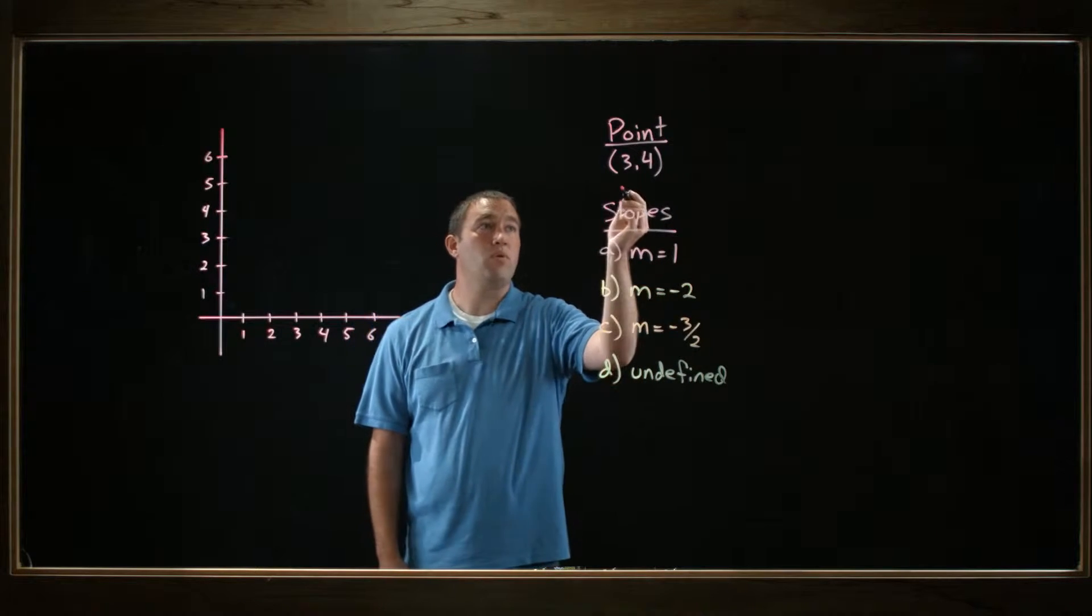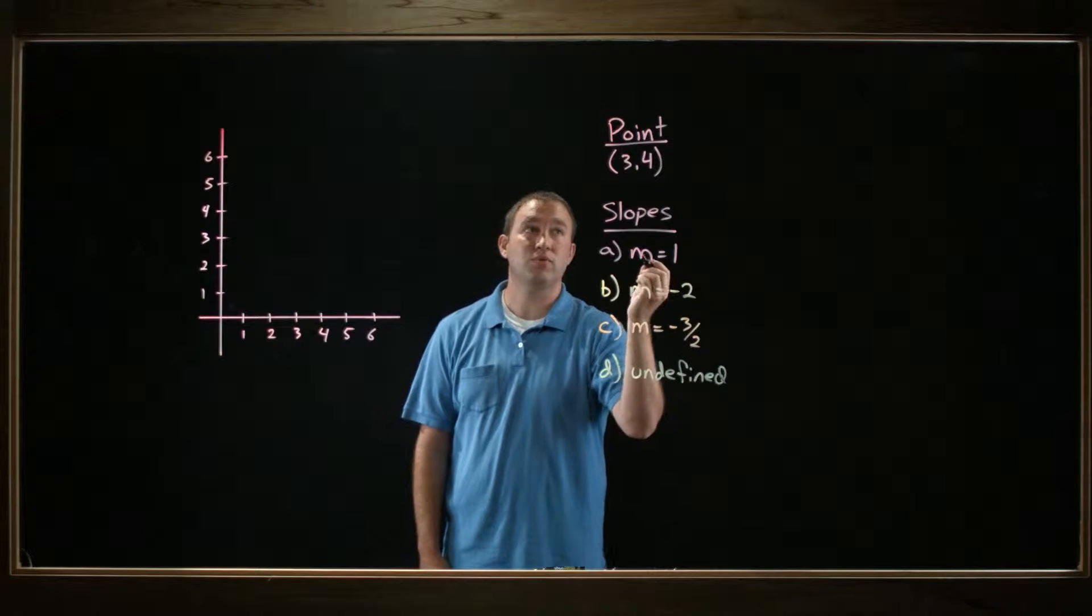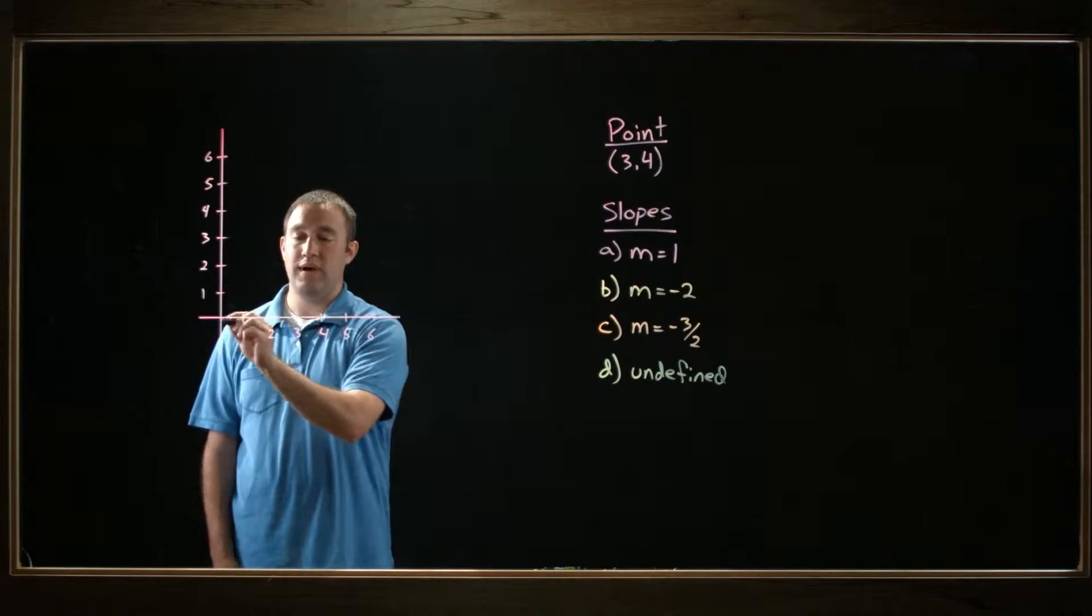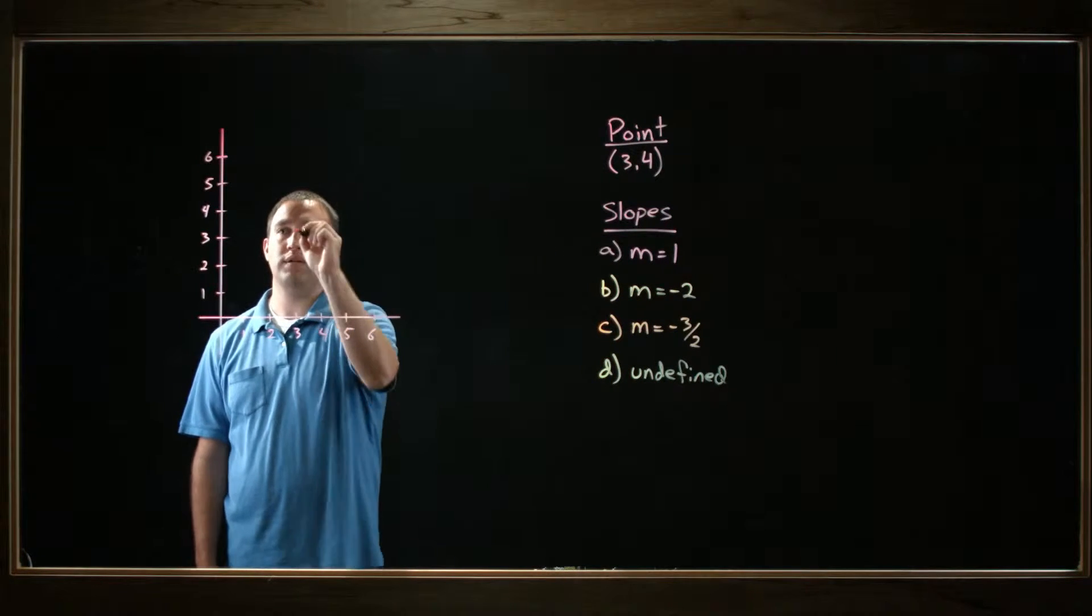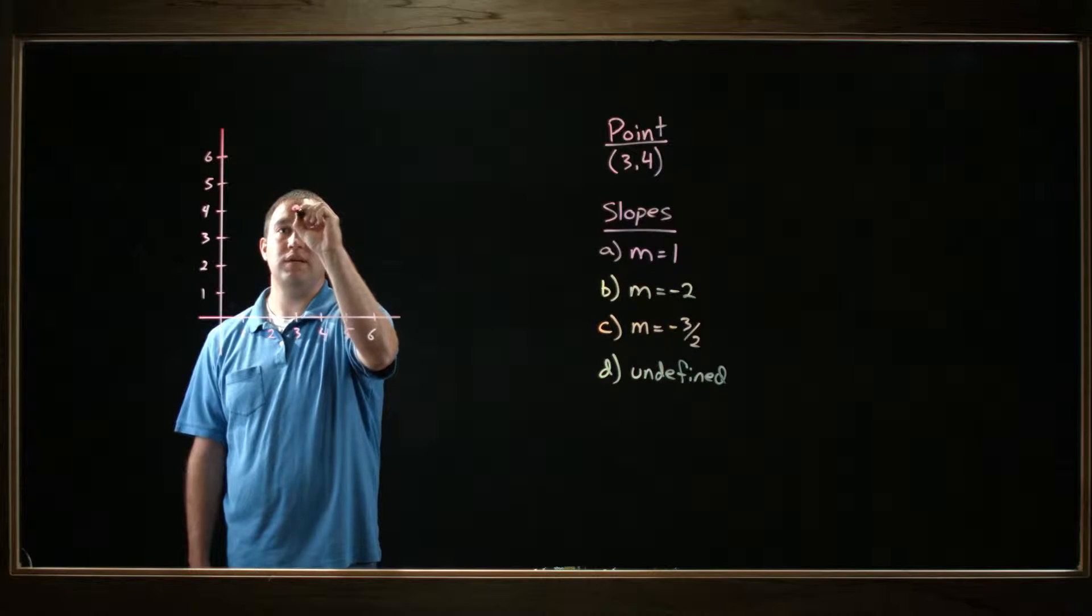So first, we're given the point (3, 4). Let's put that on the graph. That's x equals 3, y equals 4. So x equals 3, y equals 4, that's somewhere right about here.